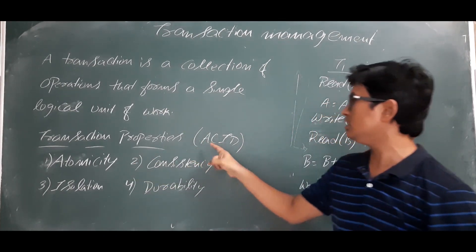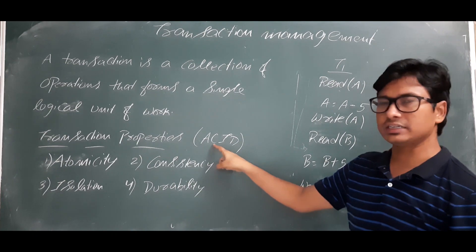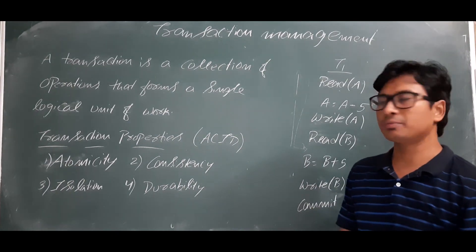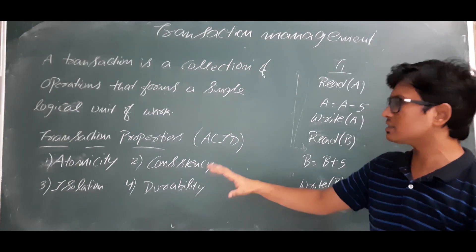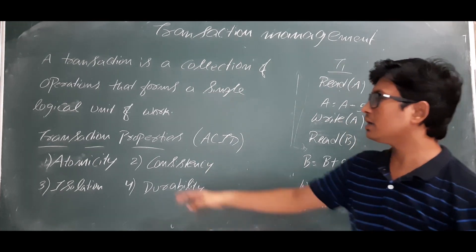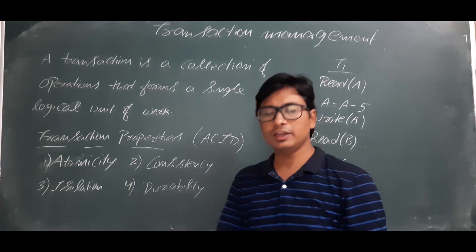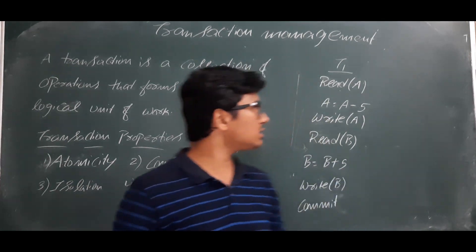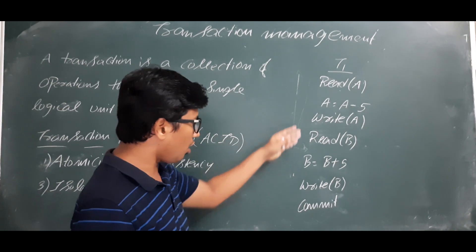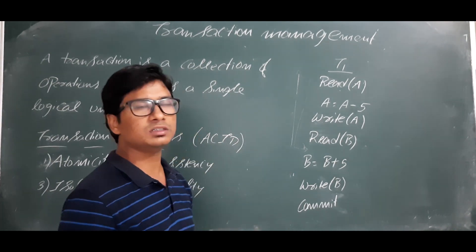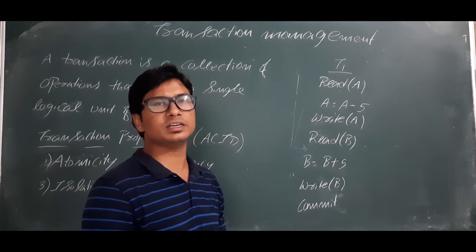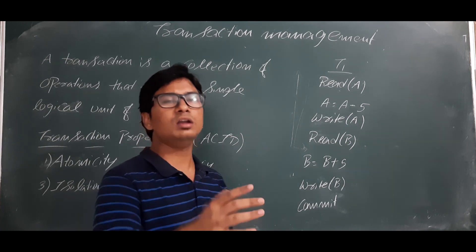ACID stands for: A for Atomicity, C for Consistency, I for Isolation, and D for Durability. Let me discuss each property in detail. Atomicity means if you have seven operations in a transaction, either you should execute all the operations or you should not execute any — we simply say all or none.